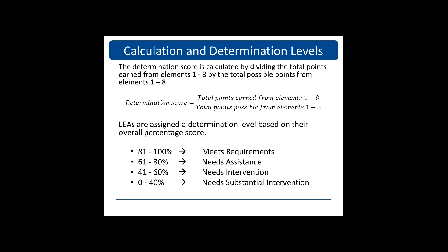Next, we're going to look at calculation and determination levels. To calculate your LEA's determination score, divide the total points earned from elements 1 through 8 by the total possible points from elements 1 through 8. Your LEA determination level is based on your overall percentage score. There are four determination levels: meets requirements, needs assistance, needs intervention, and needs substantial intervention. Your determination level will determine whether OSCE must enforce actions.